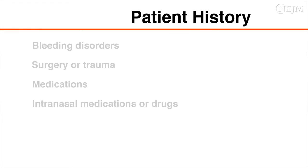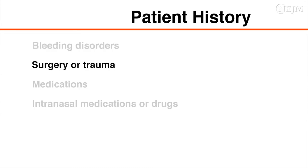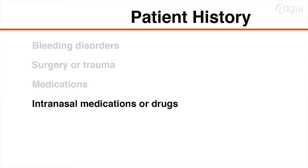Ask the patient about a personal or family history of bleeding disorders, as well as other conditions that may predispose the patient to bleeding. Such conditions include recent surgery or trauma, use of anticoagulant or antiplatelet medications, use of intranasal medications or drugs, or potential causes of thrombocytopenia, such as recent chemotherapy.